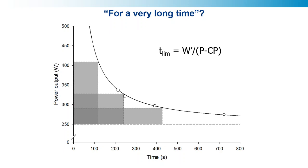I would argue that the weakest models in science are the ones that purport to explain absolutely everything but predict absolutely nothing — and I'm mentioning no names there. Tim Noakes, Central Governor Model.